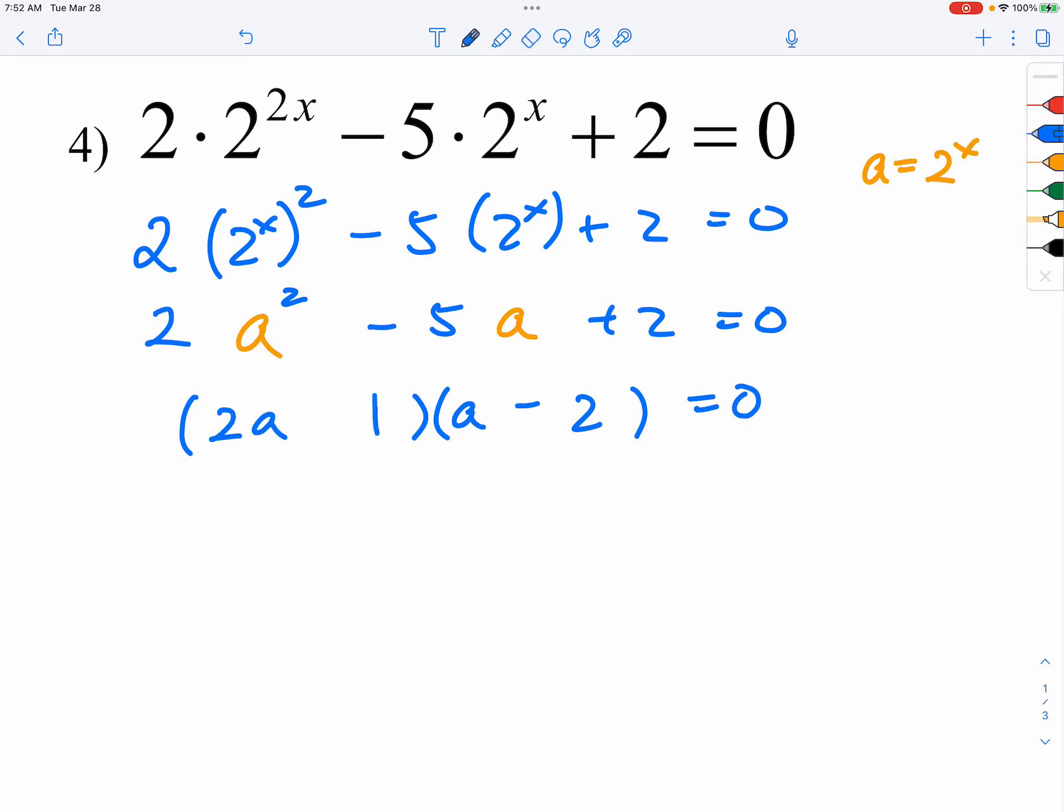So if you factor it properly, it would look something like this. So you have 2A is equal to 1, and A is equal to 2. So A is equal to 1 half, and A is equal to 2. I'm sorry, my bad. I'm going to have to rewrite this. So we have A is equal to 2, A is equal to 1 half.